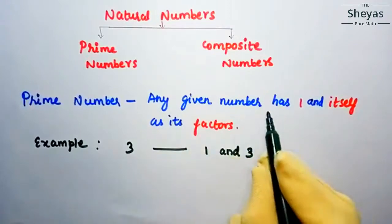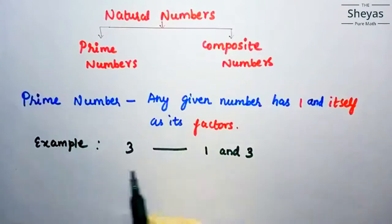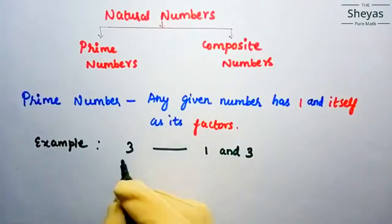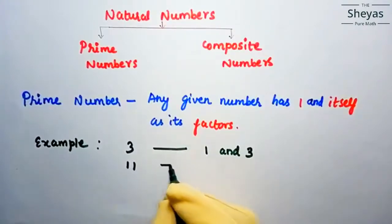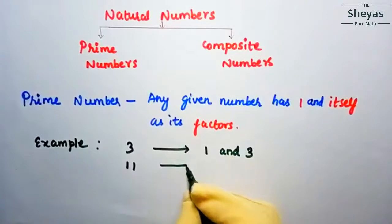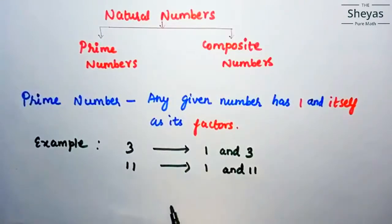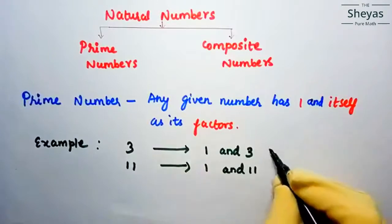Any given number that has 1 and itself as its factors is a prime number. Just see: 3 has factors 1 and 3. Now just see the factors of 11. 11 also has factors 1 and 11 itself — only 2 factors. So this is a prime number.